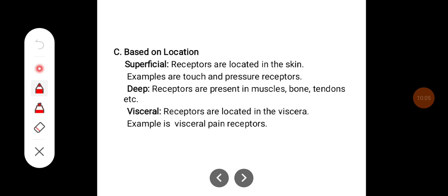Based on location, receptors are classified as superficial and visceral. Superficial receptors are located in the skin — for example, touch and pressure receptors. There are also deep receptors present in muscles, bone, and tendons. Visceral receptors are situated in the viscera — an example is the pain receptor in the viscera.